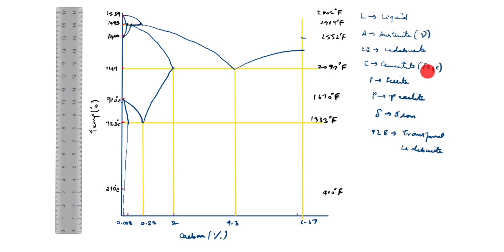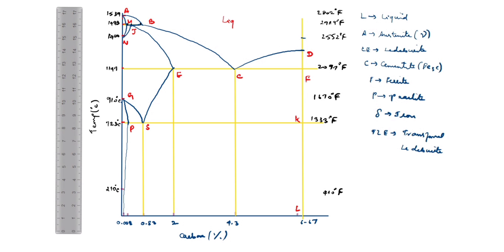Fe3C — F is iron carbide. This is point A, B, C; this is D, E; this is F. You see A, B, C, D, E, F — finished. Next, this is G, this line is H. This is J, this is N, P. This is S, K, L. This line is the liquidus line.